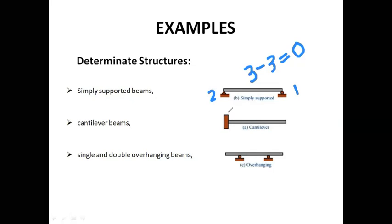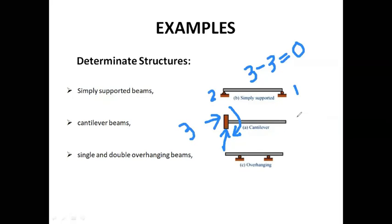For a cantilever beam, one end is fixed. At the fixed end, the beam cannot move vertically, horizontally, or rotate, giving three reactions: one horizontal, one vertical, and one moment. The free end gives zero reactions. Total reactions equal three. Three minus three equilibrium conditions equals zero, so this is a determinate structure. Similarly, a single or double overhang beam is also a determinate structure.